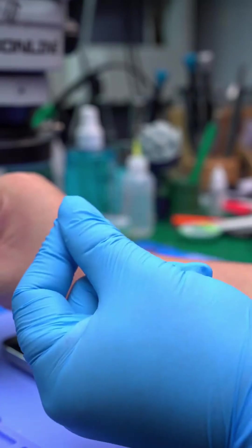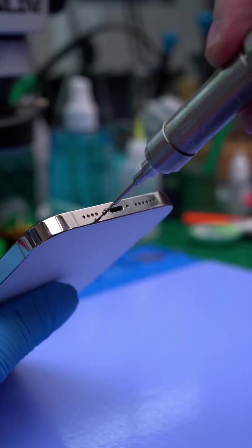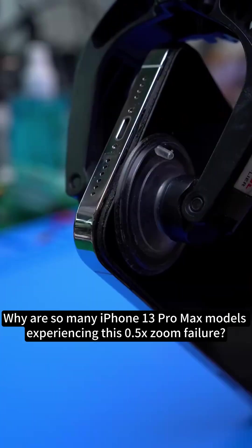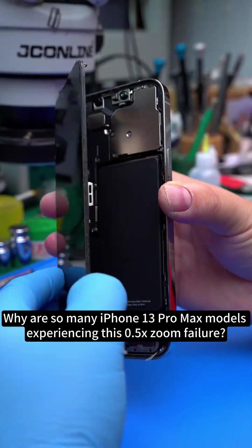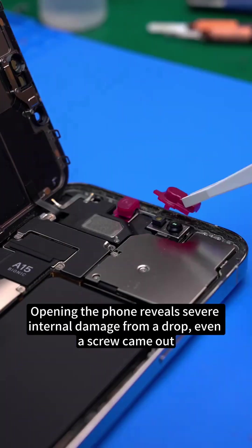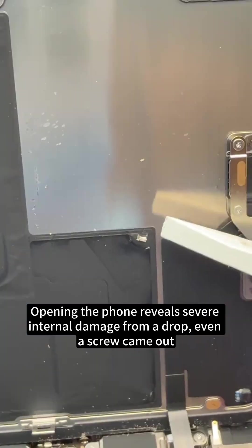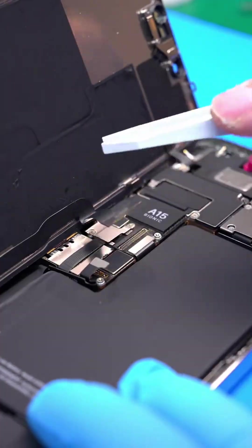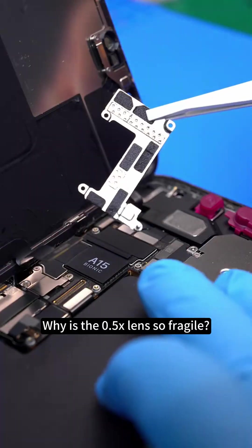Why are so many iPhone 13 Pro Max models experiencing this 0.5x zoom failure? Opening the phone reveals severe internal damage from a drop. Even a screw came out, nearly destroying the screen. Why is the 0.5x lens so fragile?